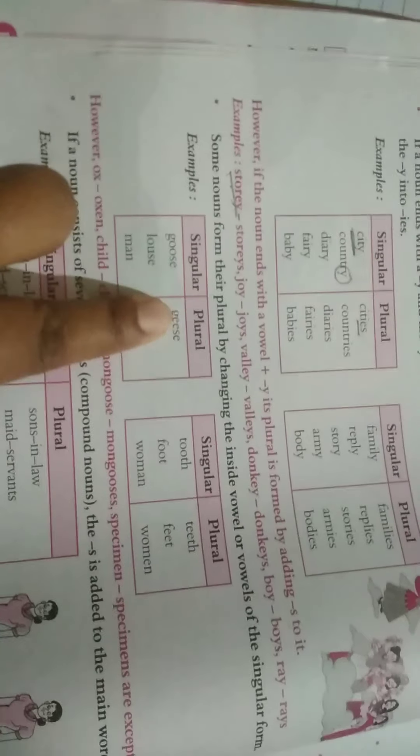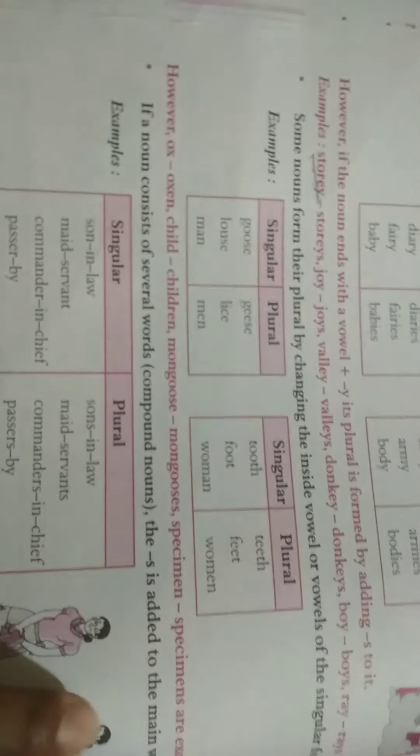For example, the goose became geese, tooth became teeth, foot became feet. So, here, there is no particular rule that is given to change these types of words into plural form. It just gets changed by their spellings. Next.